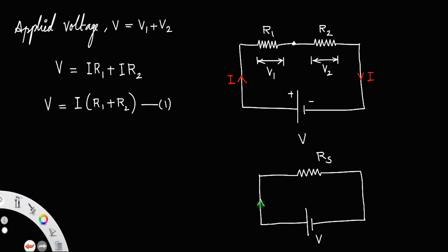Clearly, the current remains the same I, then applying the Ohm's law, you know voltage which in the second circuit voltage will be current into resistance Rs. Let us call this as equation number 2.